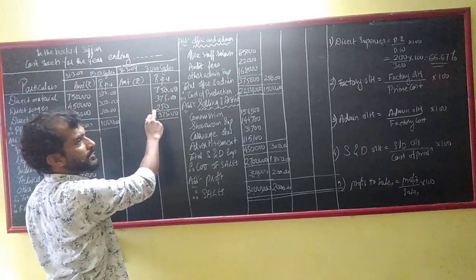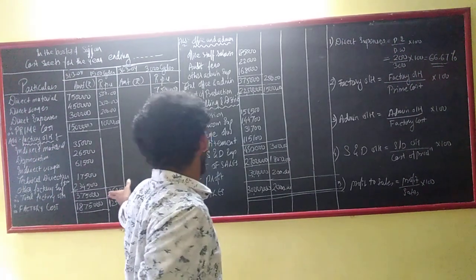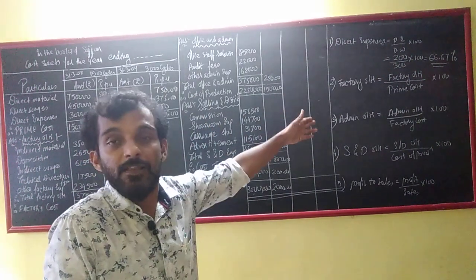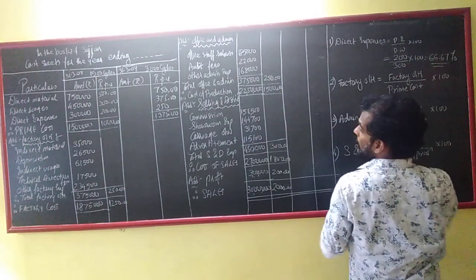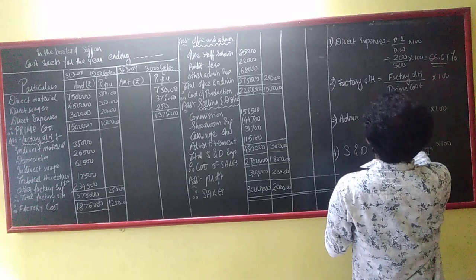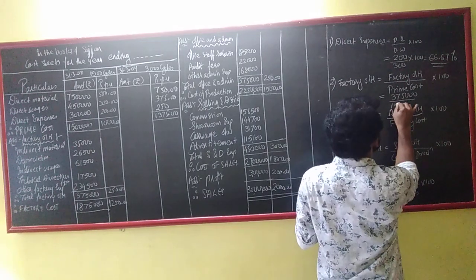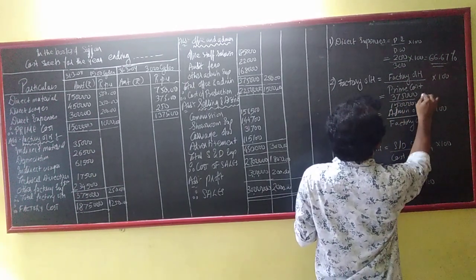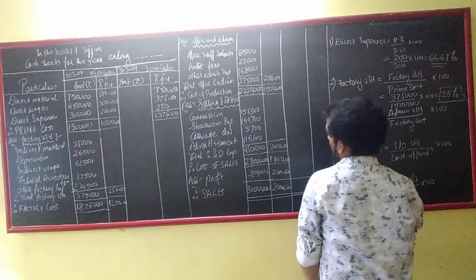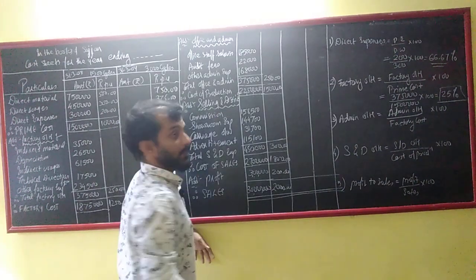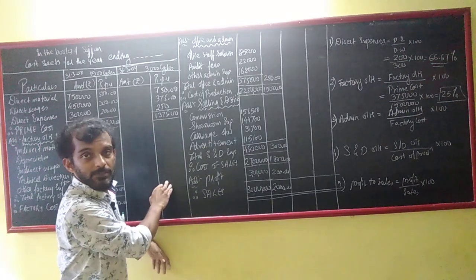So my prime cost per unit will be 750 + 375 + 250 = 1875. Total factory overheads are in the same proportion to the prime cost. Finding that proportion: factory overheads upon prime cost into 100 gives 25%. So factory overheads for 2009 = 25% of prime cost.